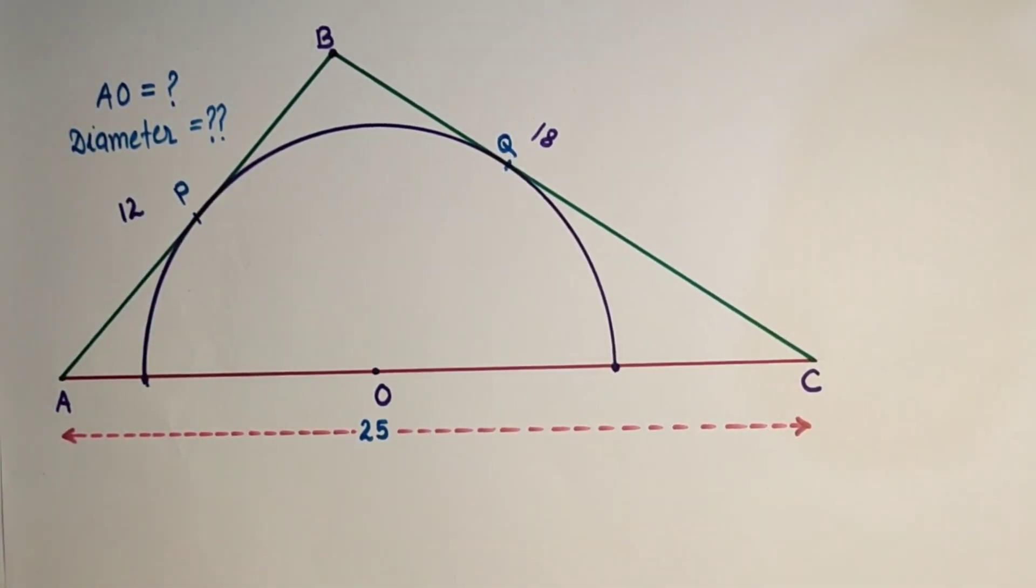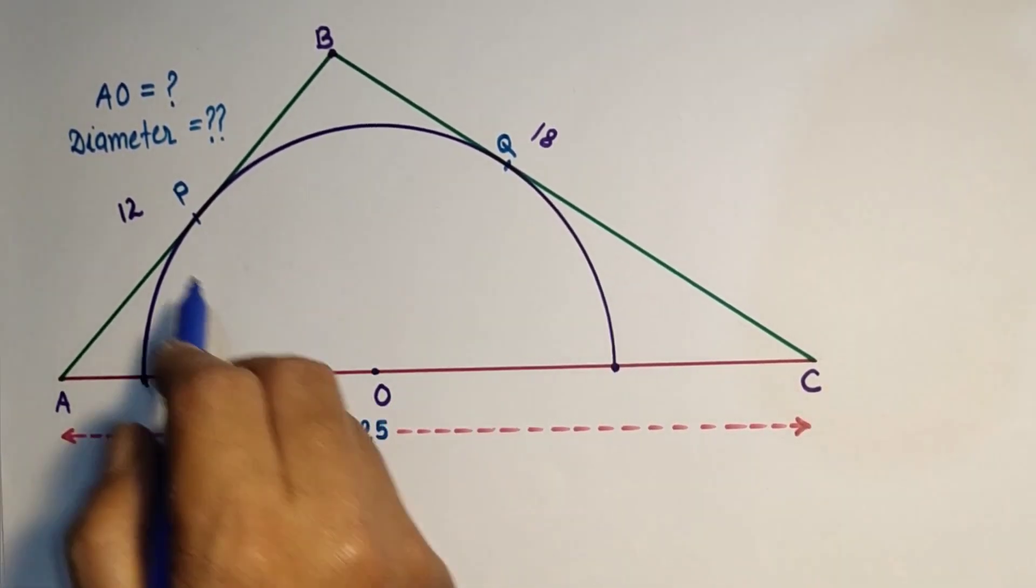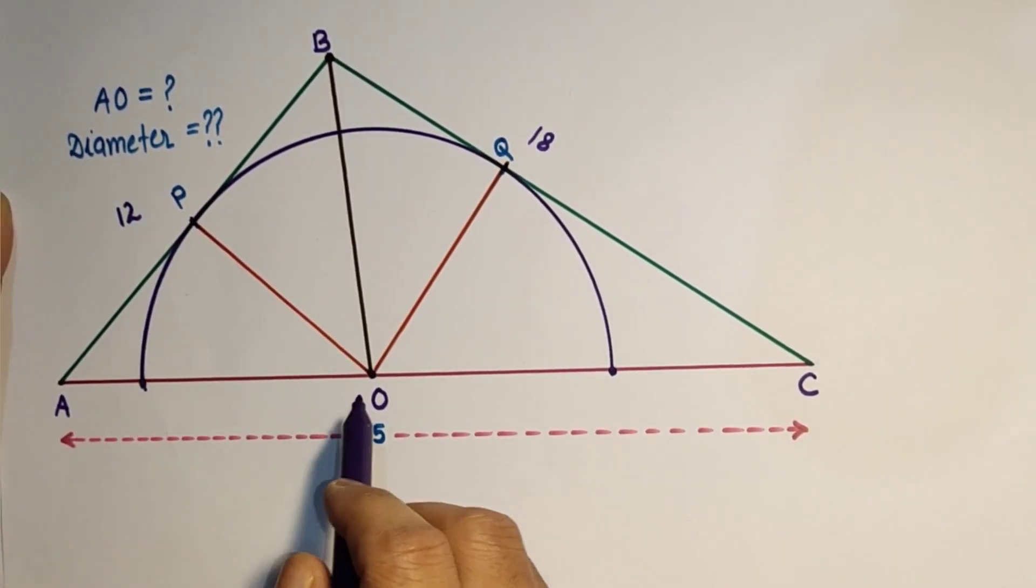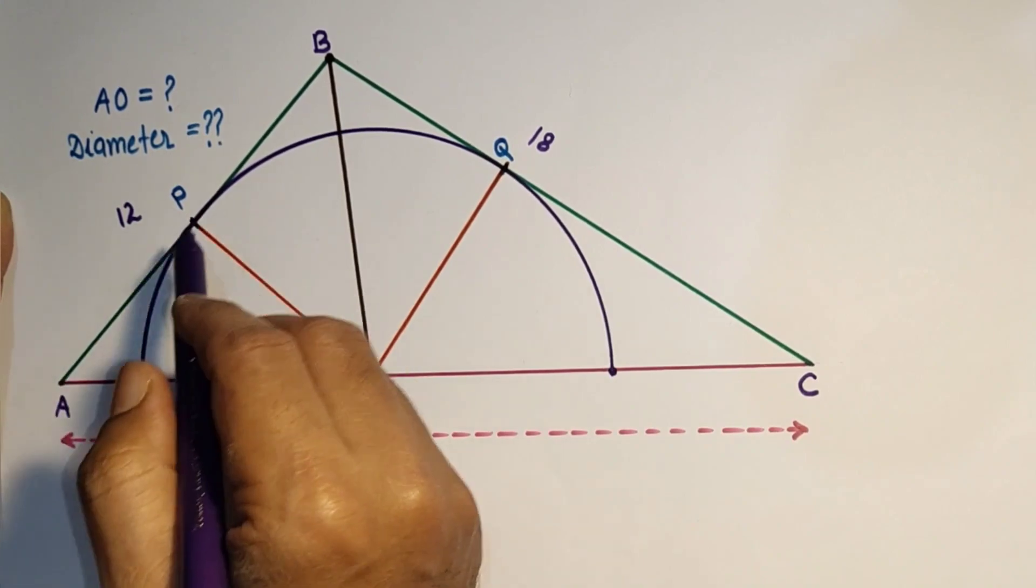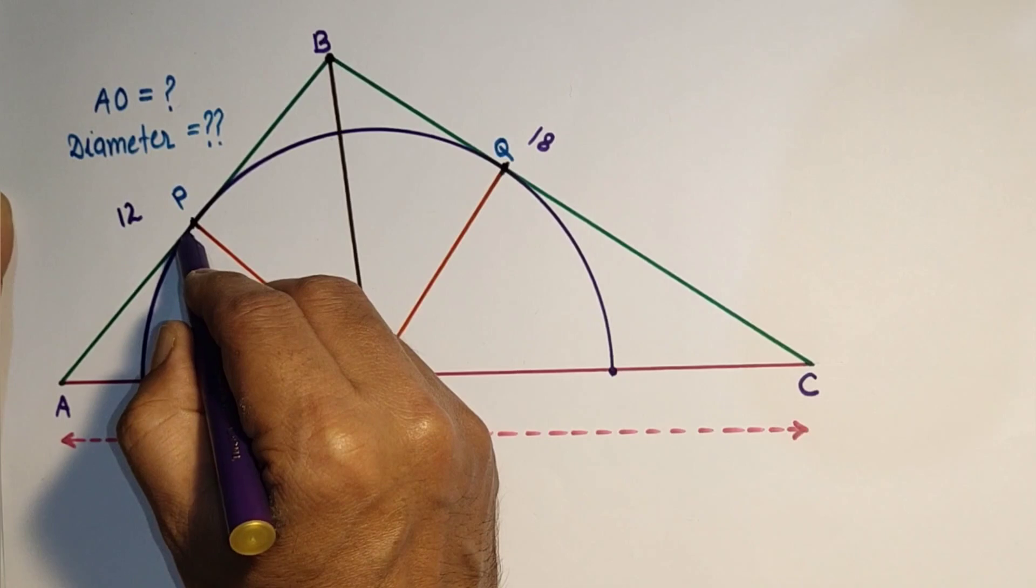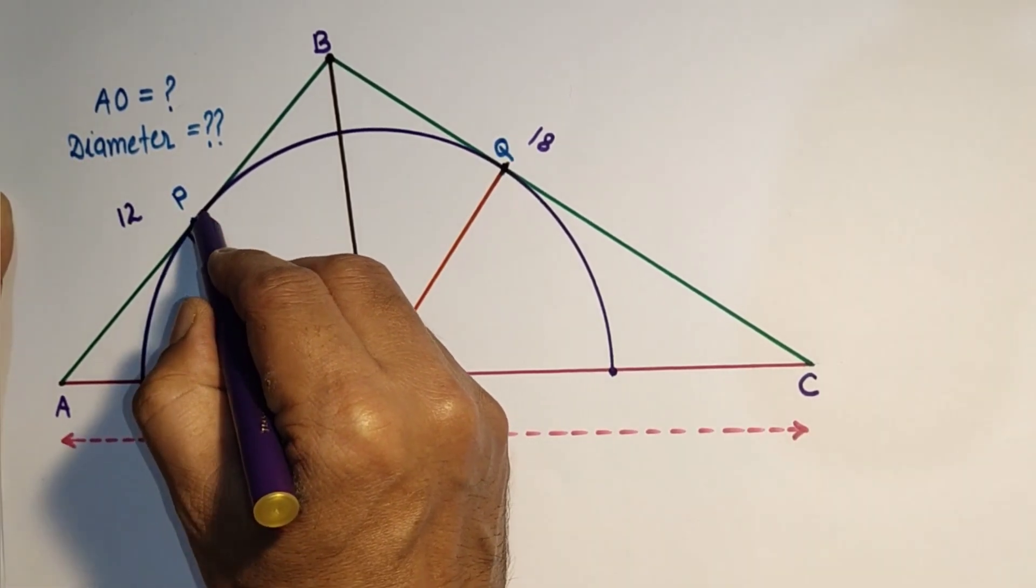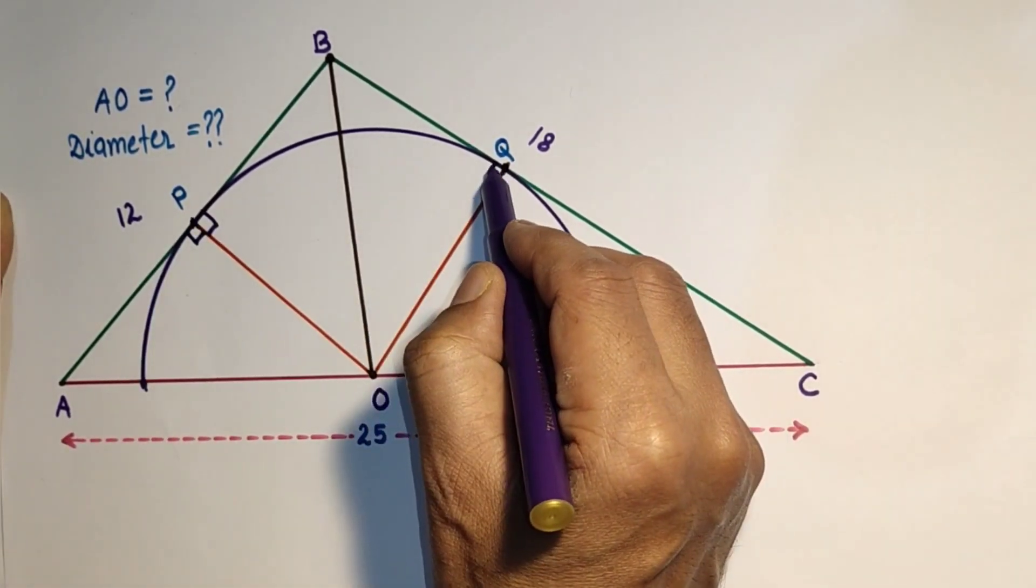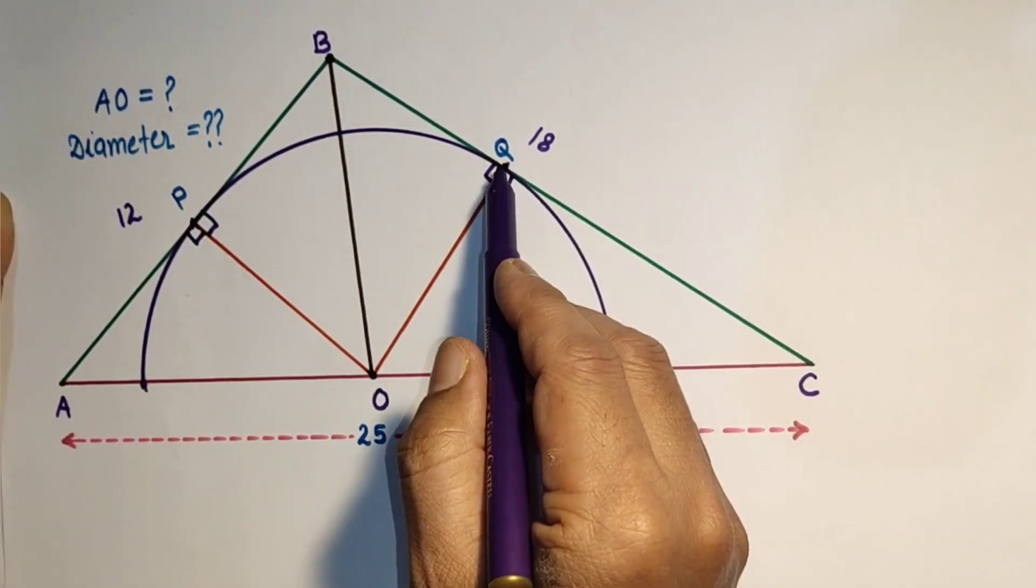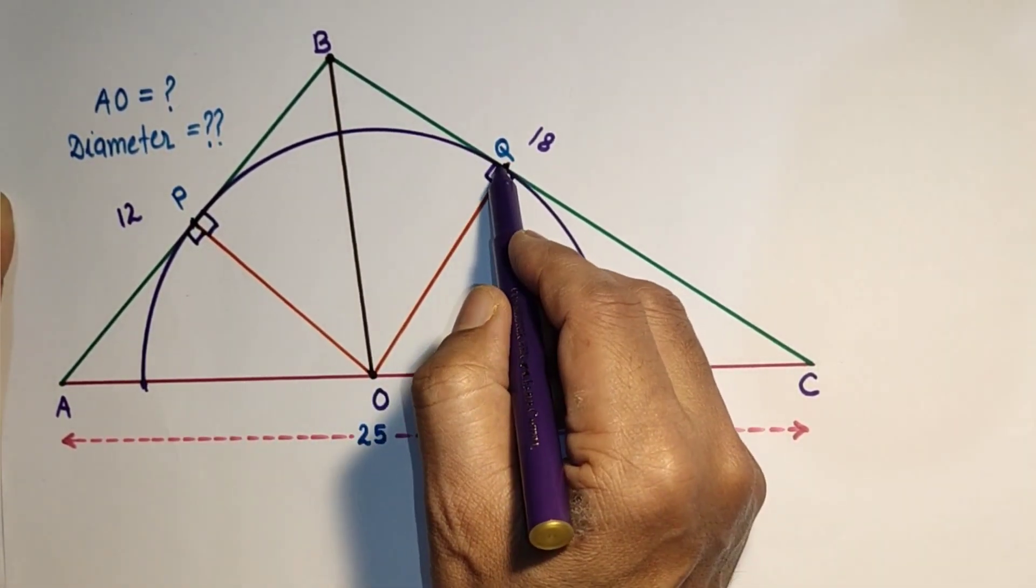To find the required values we need some constructions: join OQ and OP and join OB. As we know that radius and tangent at the point of contact will be perpendicular. So this angle is 90, this is 90. So tangent and the radius at the point of contact will be mutually perpendicular.